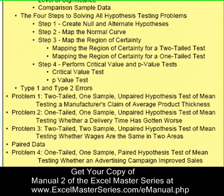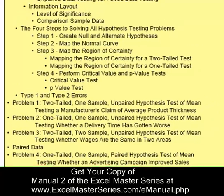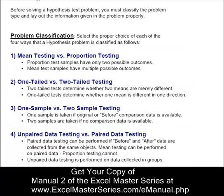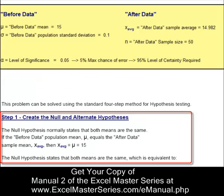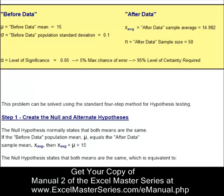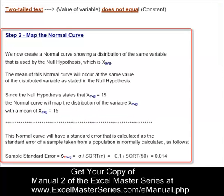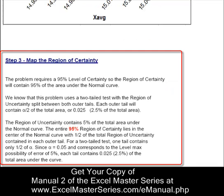Here's the next section: hypothesis test of means. We walk through each aspect of that, and most importantly the emphasis is on problem solving — lots of problems with every different aspect of hypothesis test of means. We have a four-step method you can apply to every type of hypothesis test, and we use that on every problem in this chapter, walking through the different formulas step by step. Each step is followed with a graph to show exactly what was done.